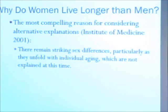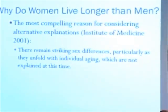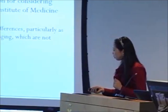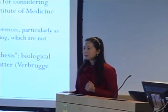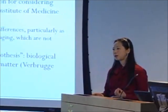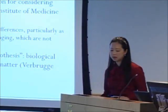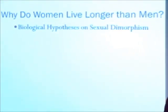This has been underscored as the most compelling reason for considering alternative explanations by a recent report from the Institute of Medicine. Because previous studies have collectively covered a wide range of social factors, we are left with the option of considering the old but powerful hypothesis, termed by Verbrugge, that biological aspects of sex differences matter. While we all agree it makes sense, not much has been done analytically to test this hypothesis in social science. Biologists have also been occupied by this puzzle, but the theories proposed have received limited empirical support and have not been tested in population-based studies.